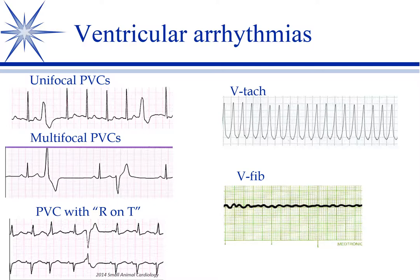PVCs can progress to continuous PVCs — that's V-tach, typically unifocal: one area of the ventricle firing over and over again. That's scary when you see it. The real concern is ventricular fibrillation, where you've lost all coordination. The myocardium of the ventricle is just wiggling and unable to coordinate a contraction, blood pressure drops, and the patient will die shortly thereafter. It's a type of cardiac arrest — asystole is more common, but V-fib is your other type.